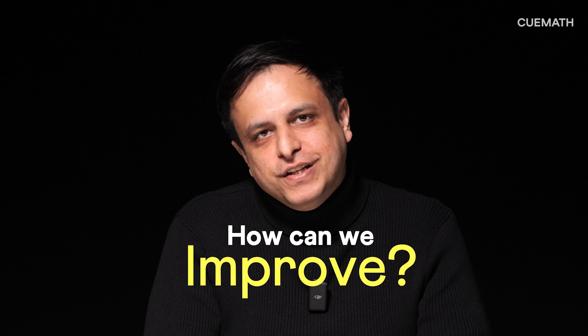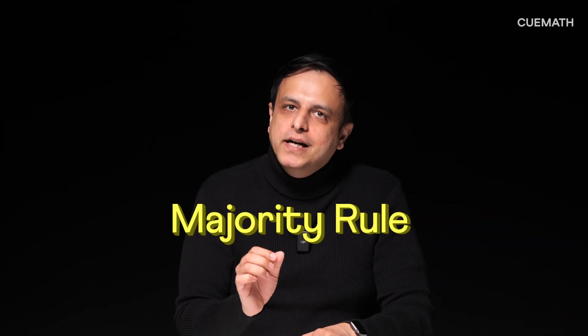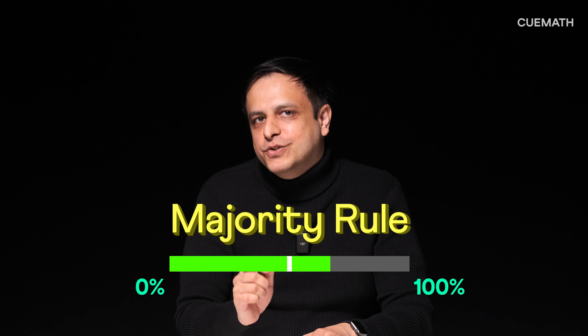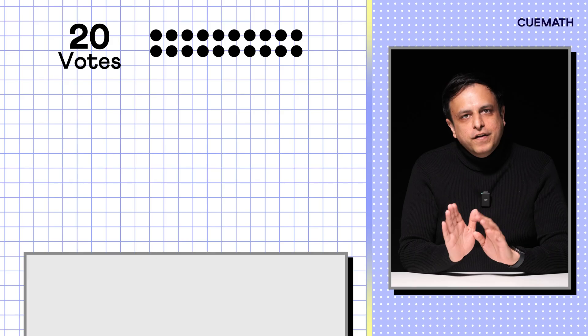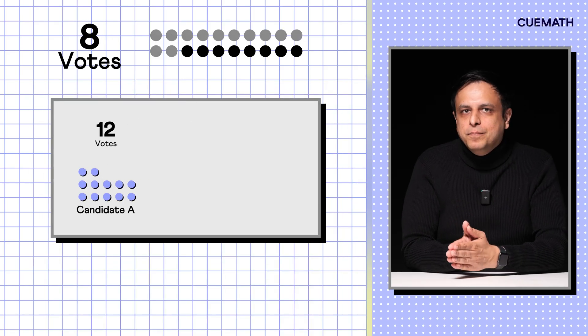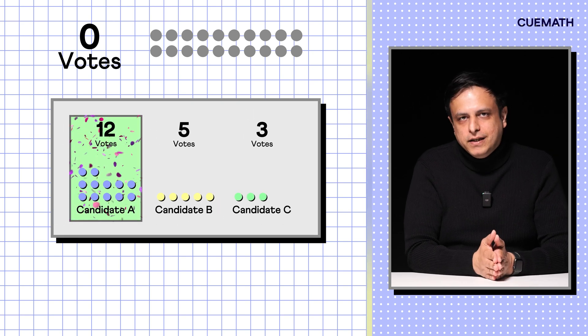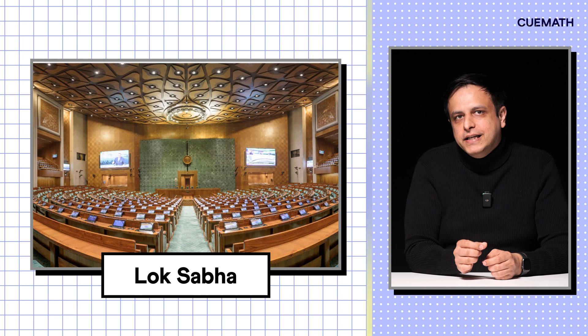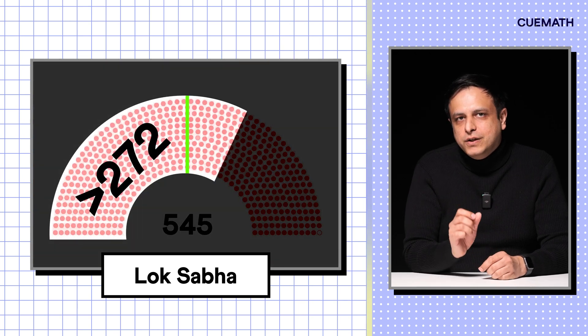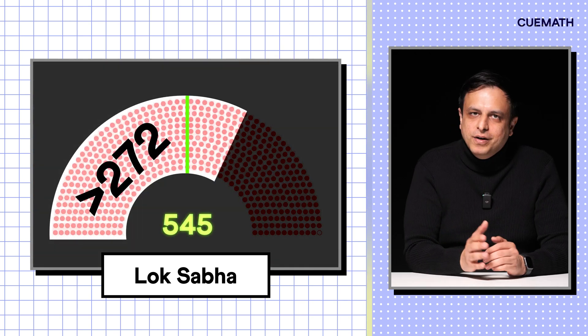So, how can we improve this? One way is to set a majority rule, where a candidate needs more than half the votes to win. For example, if A has 12 out of 20 votes, B has 5 and C has 3, A wins with a clear majority. This majority rule is used in India's Lok Sabha, where a party needs more than 272 of the total 545 seats to form a government.